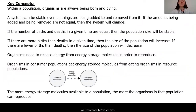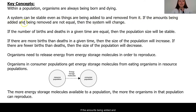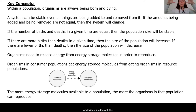As I mentioned before, we have collected a lot of evidence and figured out some really key ideas about how populations change or stay the same over time. We know that within a population, organisms are always born and always dying. This means that even when a population is staying the same, something is being added or taken away — it is just balanced. A system can be stable even as things are being added to or removed from it. We saw this with our populations and resources game and with our video with the tanks of water.